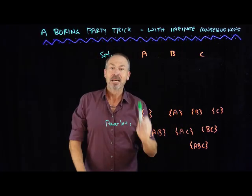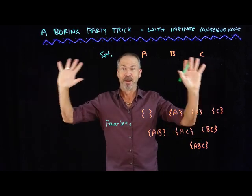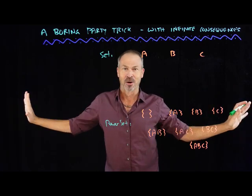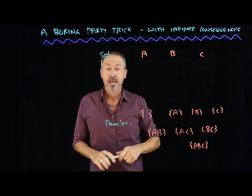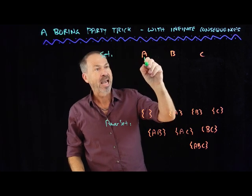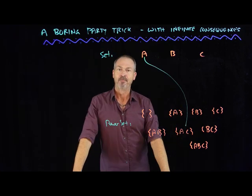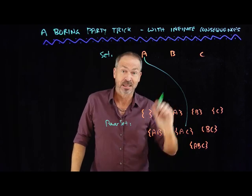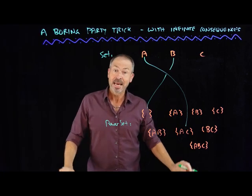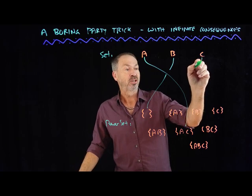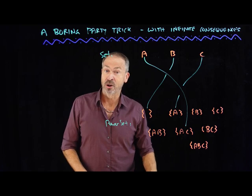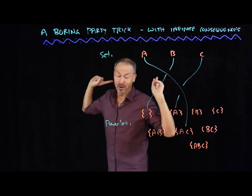Now hand a marker to an audience member and say, I'm going to perform a fabulous mind-reading trick with you. Turn your back to the board so you're not going to see anything going on. But instruct your audience member to draw a leash from the very first letter A to any of the sets below. So A, they might want to leash it to the set A, C or something. Then ask them to leash the letter B to some subset below. They might leash B to the empty set. And then leash C to some set below — they might leash C to A. When they're done, ask them three questions. You're going to hear the answers but not see anything going on behind them.